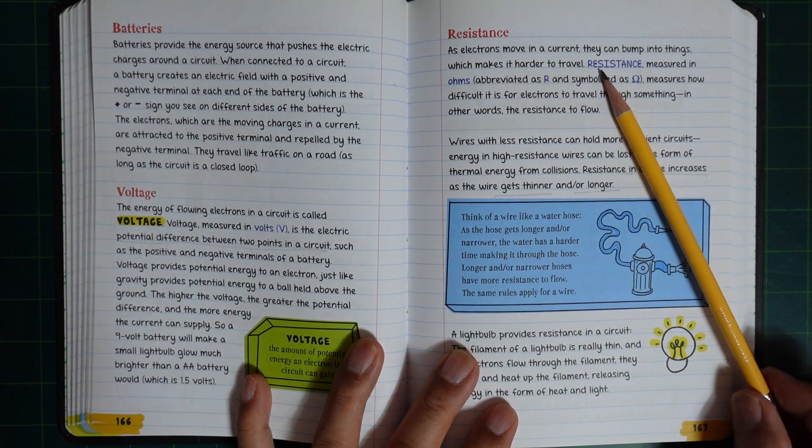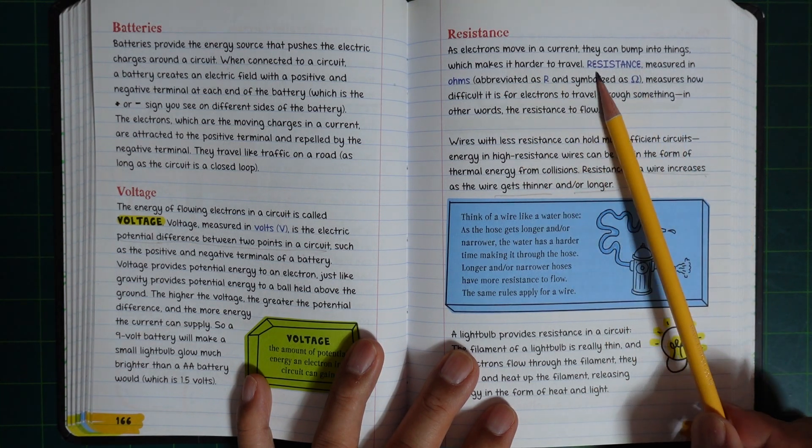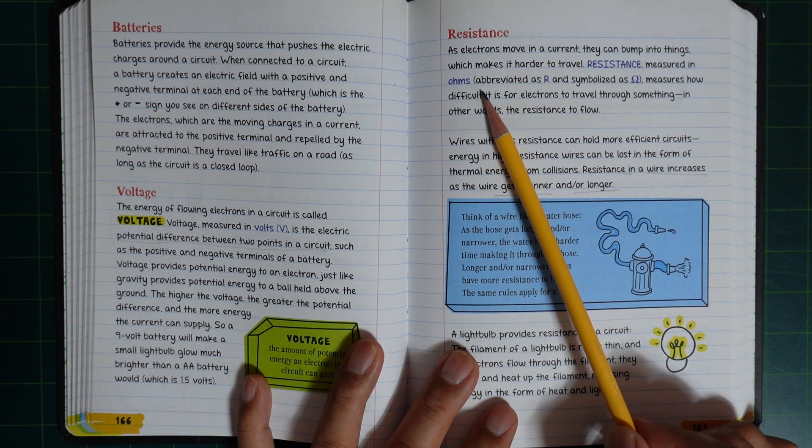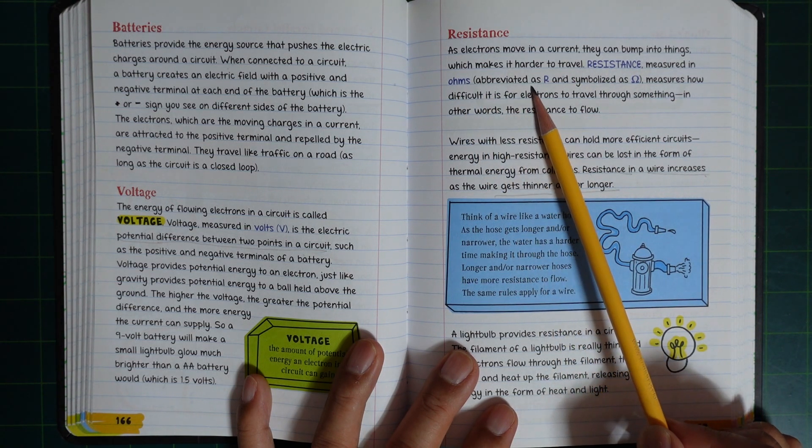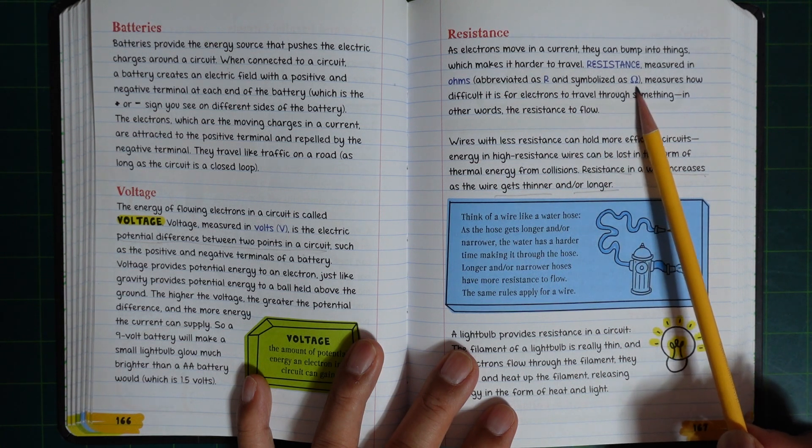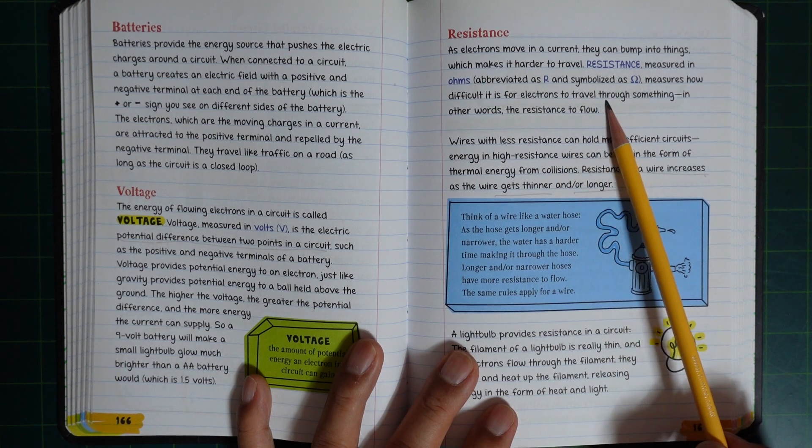As electrons move in a circuit, they can bump into things which makes it harder to travel. Resistance, measured in ohms, abbreviated as R and symbolized as Ω, measures how difficult it is for electrons to travel through something.